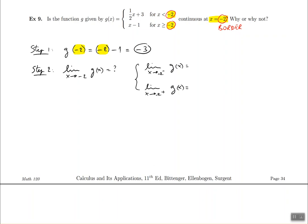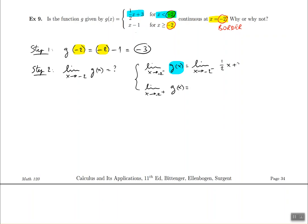Let's begin with the first limit — x approaching negative 2 from the left, meaning we're slightly less than negative 2. The first equation has the condition x less than negative 2, so we use the first equation. We evaluate the limit as x approaches negative 2 minus of one half x plus 3. Plugging in negative 2 gives us negative 1 plus 3, which equals 2. That's the final solution for the left-hand limit.